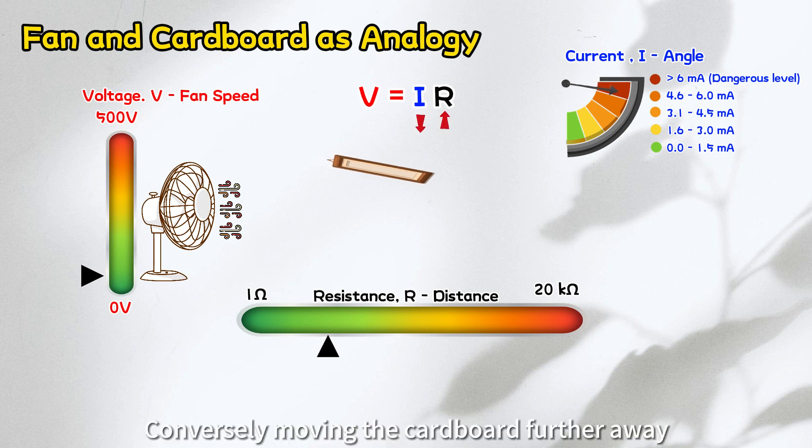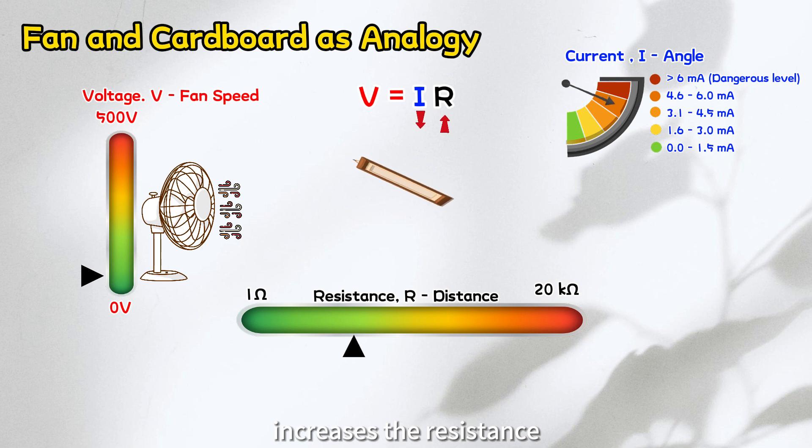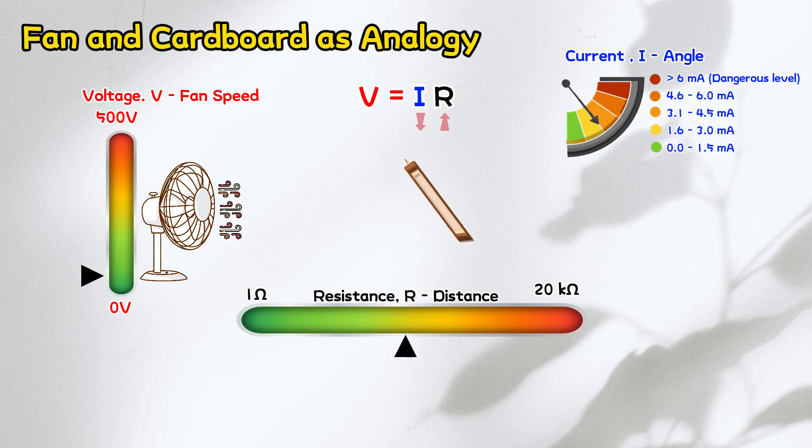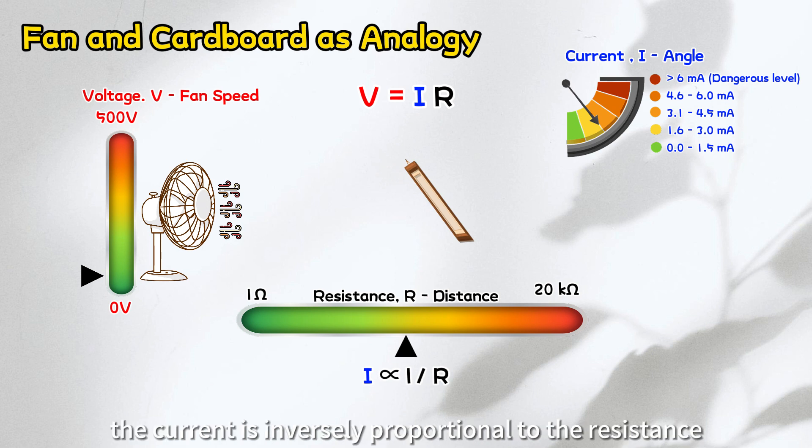Conversely, moving the cardboard further away increases the resistance, resulting in a smaller angle of lift and lower current. This demonstrates that with fixed voltage, the current is inversely proportional to the resistance.